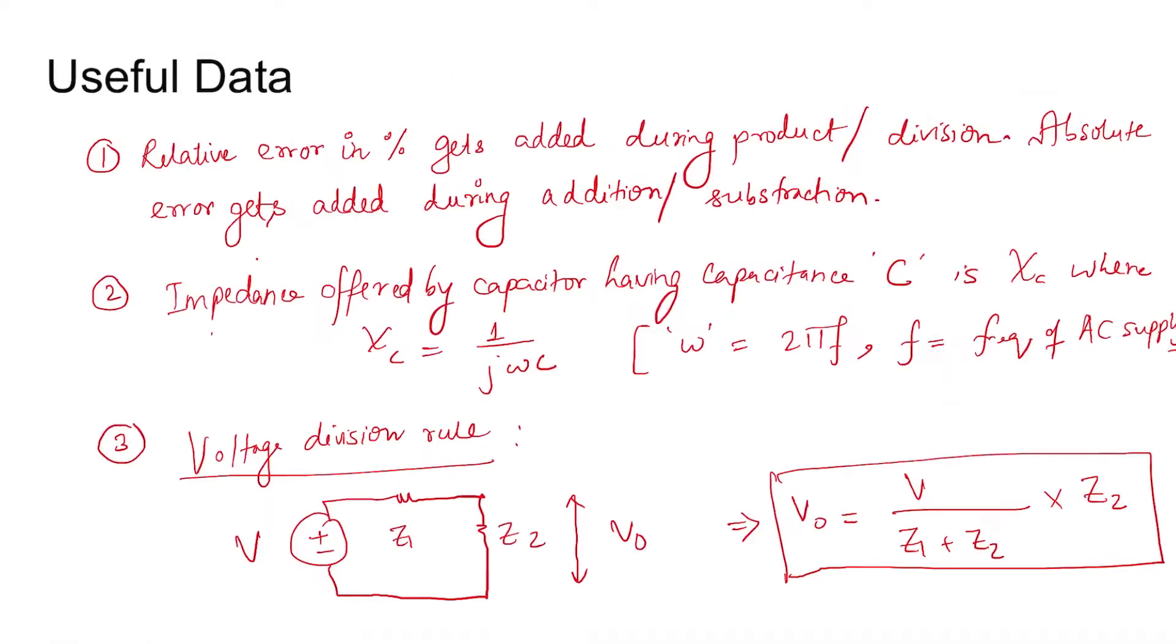For useful data, you need to know that the relative error in percentage gets added during product or division. For absolute error, it gets added during addition and subtraction.